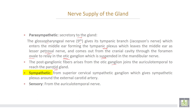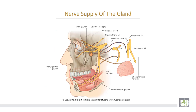Sympathetic fibers come from the superior cervical sympathetic ganglion, which gives the sympathetic plexus around the external carotid artery. Sensory fibers come from the auriculotemporal nerve. In summary, the nerve supply to the parotid gland comes from the glossopharyngeal nerve via the tympanic branch, exits through the foramen ovale, then joins the auriculotemporal nerve to reach the parotid gland.